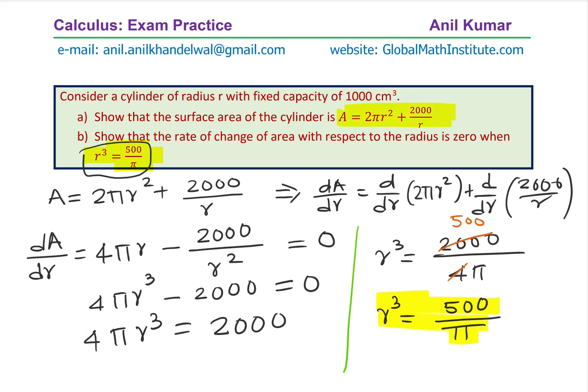So basically, you should remember that if the volume is fixed, we have a formula which relates them. So 2000 is twice the value of the volume, fixed volume. And at that stage, rate of change of area with the radius is 500. That means half of the volume divided by π. Is that clear to you?